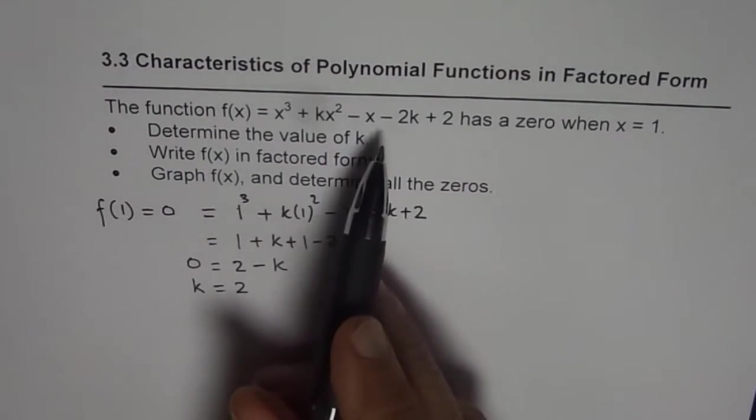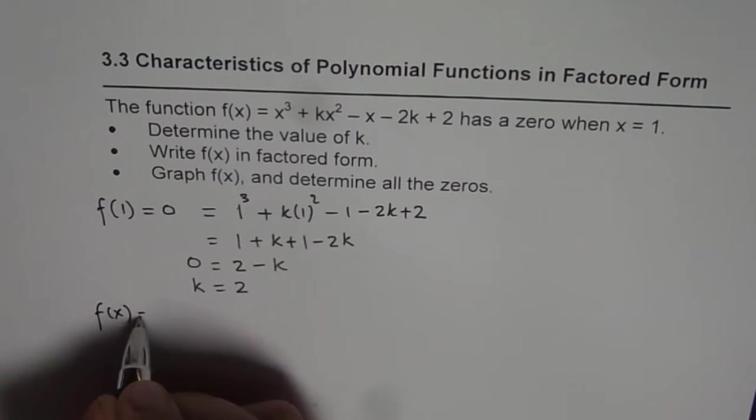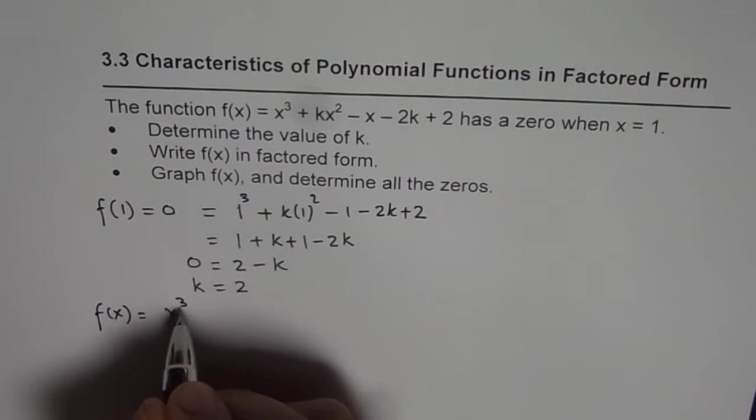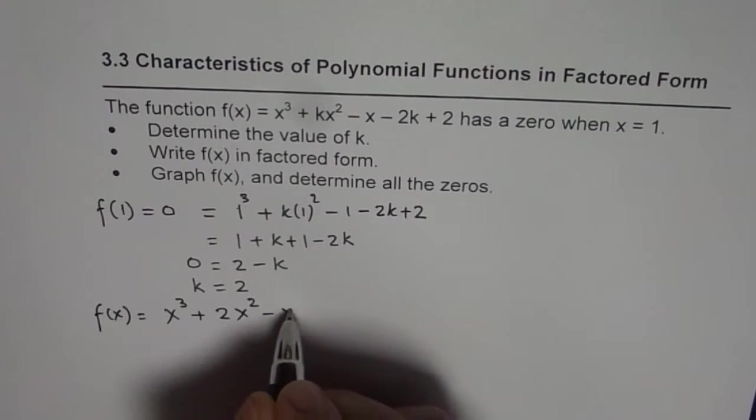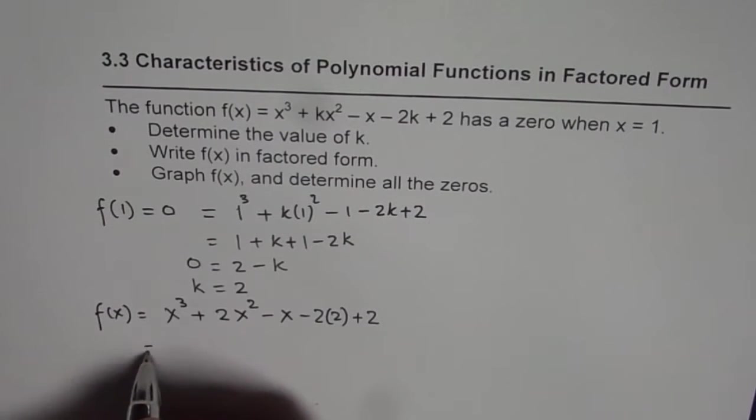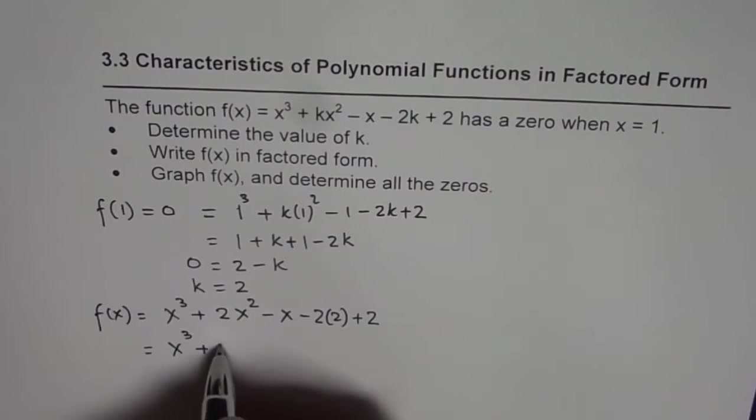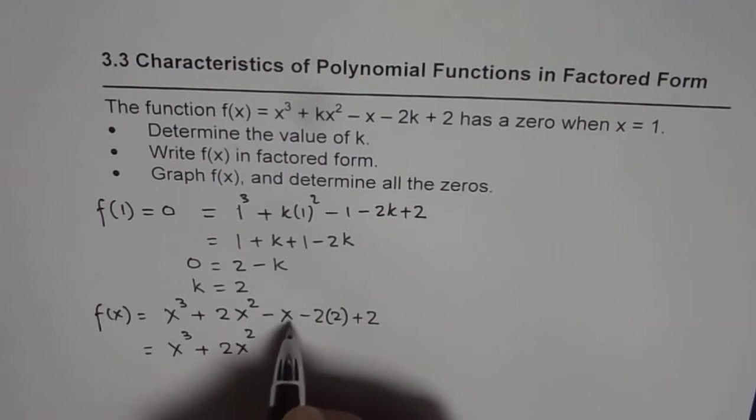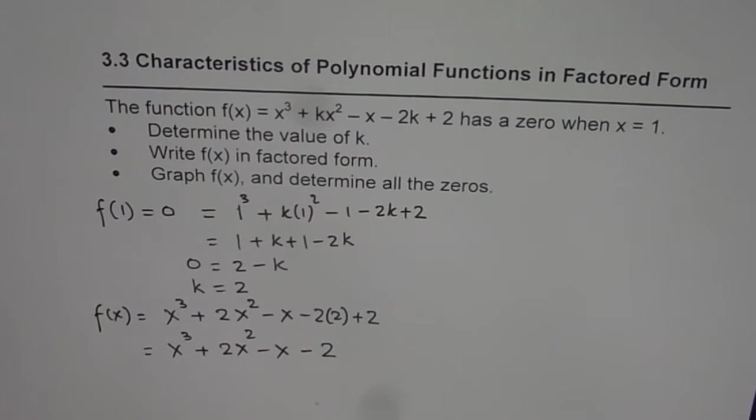Now let us write the function again with this value of k. So what we get here is f(x) equals x cubed plus k is 2, so 2x squared minus x minus 2 times 2 plus 2. That gives us x cubed plus 2x squared minus x minus 4 minus, so we get minus 2 here.